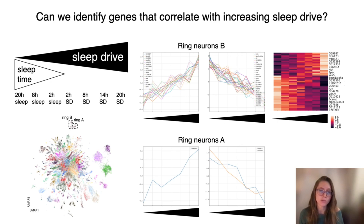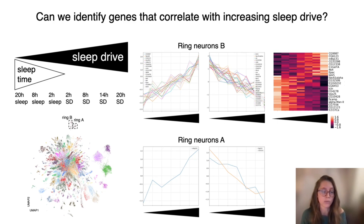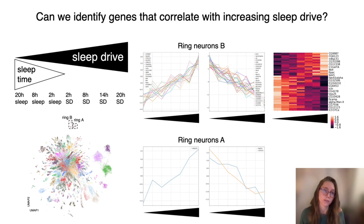We have run this analysis for many cell types, and I'm showing one particular cell type we found interesting. The ellipsoid body is a region in the fly brain divided into different ring neurons, all with very different functions. We know that R5 neurons are important for regulating sleep drive. In our UMAP, the ring neurons are separated into at least two sub-clusters. Running the sleep drive analysis on these two clusters separately, we found that only one subtype — ring neurons B — has highly correlating genes, while the other subtype has almost none, suggesting that this subtype is involved in sleep drive and the other is not.